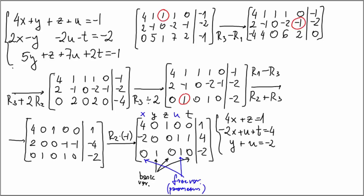So from the third equation, we have Y = -2 - U. From the first equation, we solve for Z. That's 1 - 4X. And from the second equation, we solve for T, which is 4 + 2X - U. Now, X and U are free variables, so they can take on any real values. And this is the solution of the system. There are infinitely many solutions with two parameters.